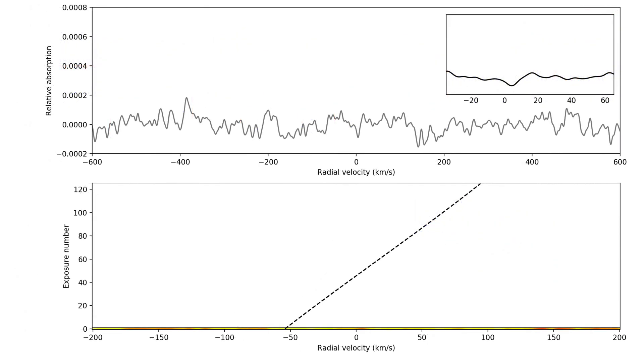Typically, this cross-correlation function will be computed for every spectrum obtained during the time series. Because the radial velocity of the planet changes over the course of the transit, the peak location of the cross-correlation function will shift accordingly.